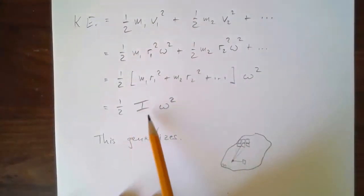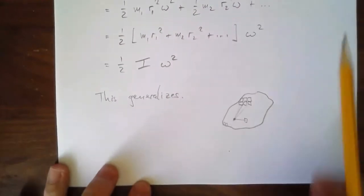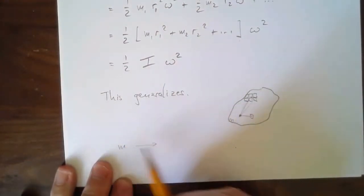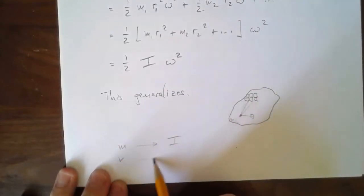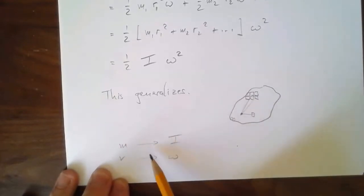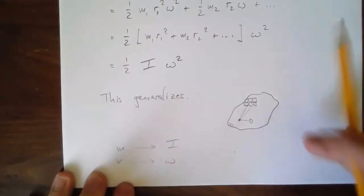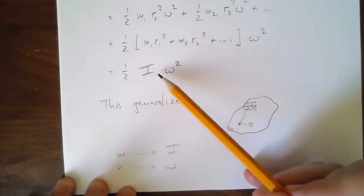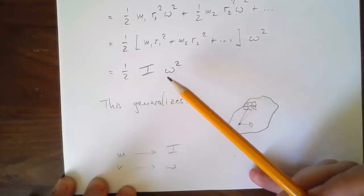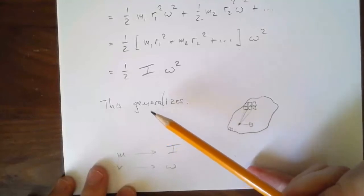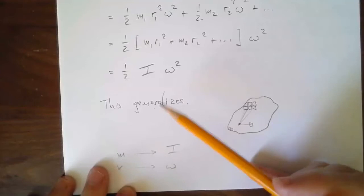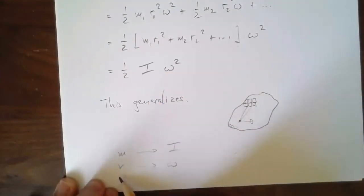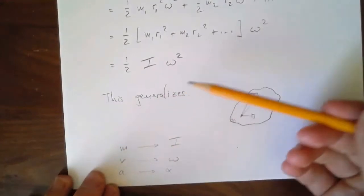The expression ½Iω² is really a translation using the dictionary we've already developed: mass in translational motion becomes I, and v becomes omega. In terms of the relationships between quantities, this looks like ½mv². We had F = ma, then torque = I·α. So this dictionary of how quantities are related includes the kinetic energy.